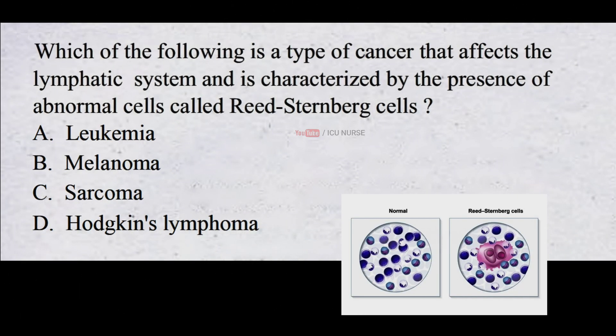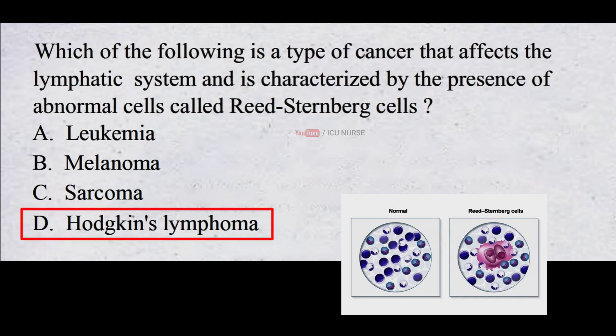Which of the following is a type of cancer that affects the lymphatic system and is characterized by the presence of abnormal cells called Reed-Sternberg cells? A. Leukemia B. Melanoma C. Sarcoma D. Hodgkin's Lymphoma. The correct answer is D. Hodgkin's Lymphoma. Hodgkin's Lymphoma is a type of cancer that affects the lymphatic system. It is characterized by the presence of abnormal cells called Reed-Sternberg cells.